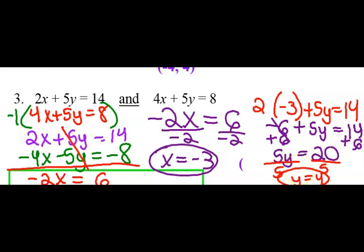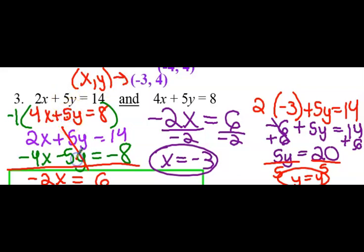So this is when you say, did I finish? I have my x, I have my y. And the answer is negative 3 comma 4. The x is negative 3, the y is 4. Make sure you put it in that order: x, y. So what did I do first? I stacked them. Then I saw what I could eliminate. Eliminate that choice. Find the answer to the remaining variable, plug it back in, find the other one.